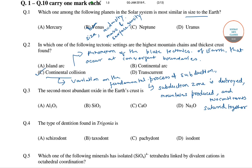Now in the next question we have: which is the second most abundant oxide in the Earth's crust? The first is SiO₂, silicon dioxide, present at 42.86%. Next is aluminum oxide (Al₂O₃) at 6.99%, then calcium oxide at 4.37%, and sodium oxide at 0.45%. So the second most abundant oxide among the following is aluminum oxide, Al₂O₃. The correct answer is option number one.